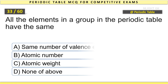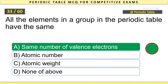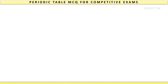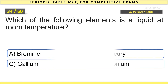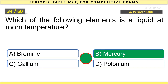All the elements in a group in the periodic table have the same number of valence electrons. Which of the following elements is a liquid at room temperature? Mercury.